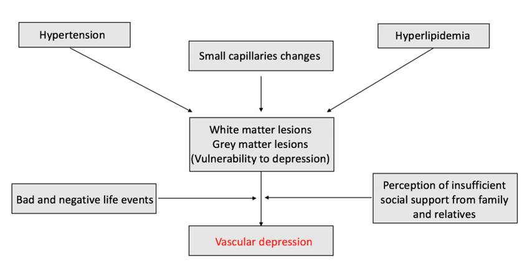Both of these competing definitions are supported in the literature and provide a strategy to diagnose vascular depression. The criteria for MRI-defined vascular depression focuses on the presence and severity of either deep white matter lesions, often referred to as white matter hyperintensities, or subcortical gray matter lesions. The most severe lesion in an individual is scored based on predefined criteria and considered in combination with two measures of depressive symptomology. These white matter lesions are thought to disrupt emotional and cognitive functioning.